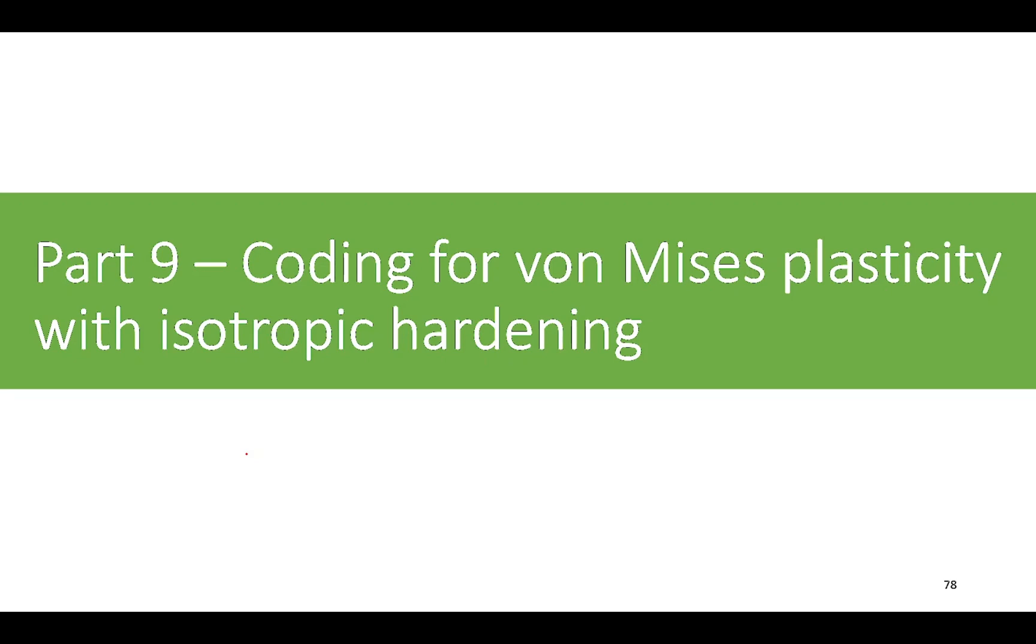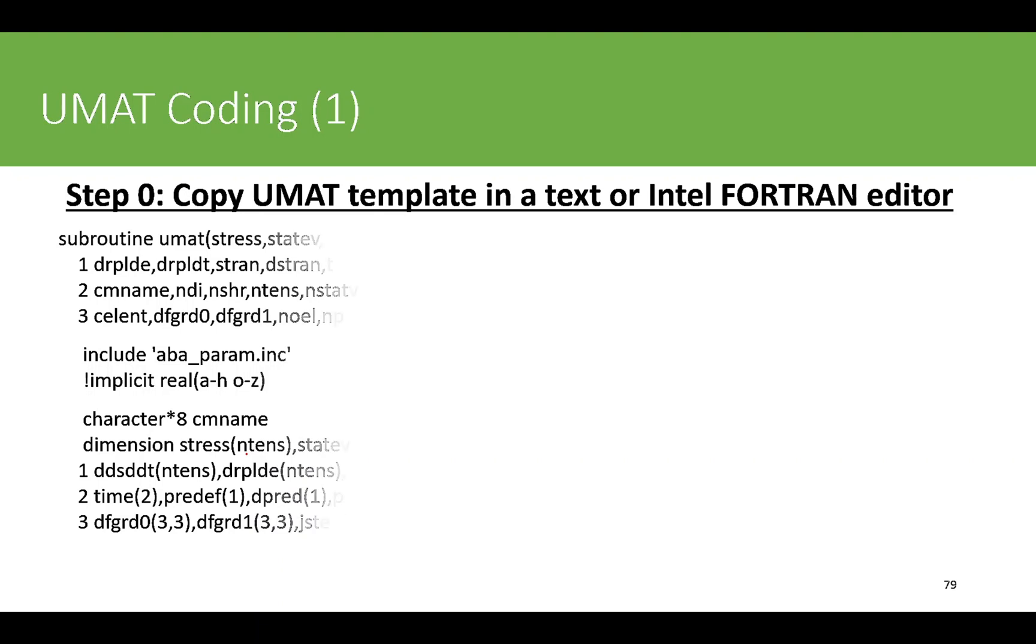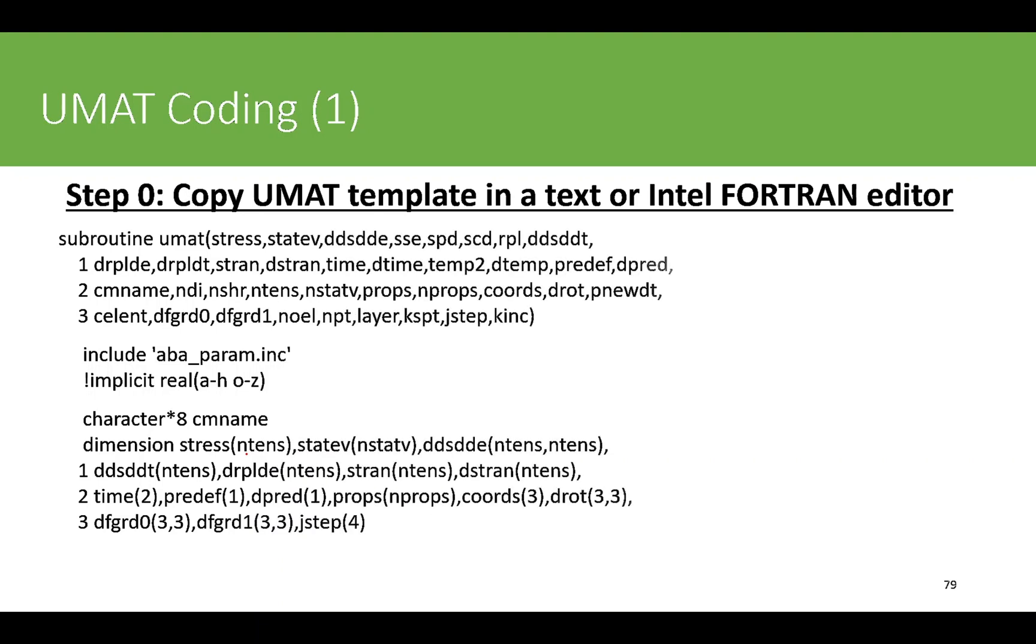In this part we move towards the coding for the von Mises plasticity with isotropic hardening. The process is very similar - we first copy the template of the UMAT in a text file or Intel Fortran editor, which is the same as the previous part. The initial architecture and variables I've already explained in the previous part, so I'm not going to go through it again. You have to type your code here between the initialization and return statement, and this routine will update the stresses, state variables, and other quantities which are needed.